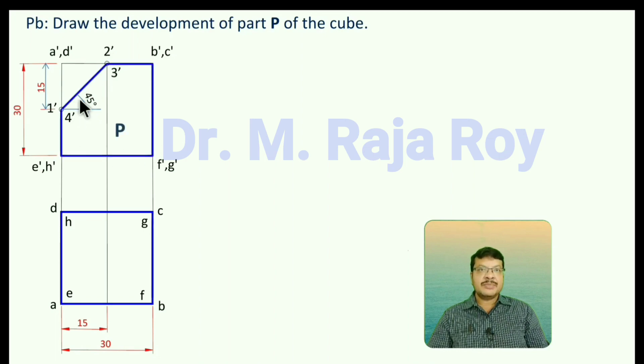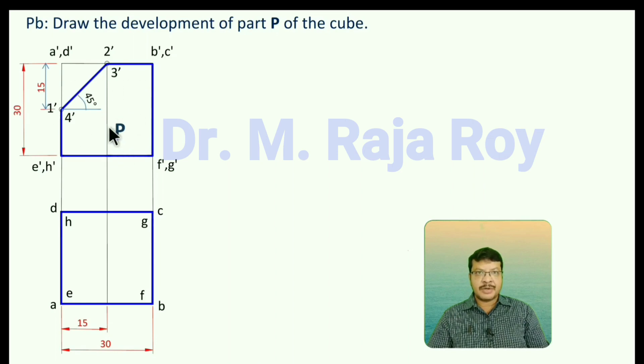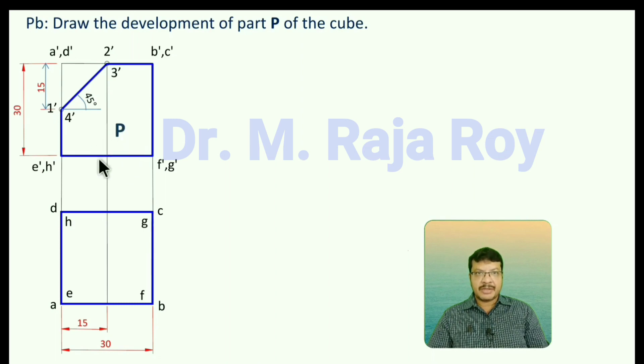If you connect all these points, you will get the required portion P. This is part P, and for this you have to draw the development. For prisms, you have to apply the parallel line method.